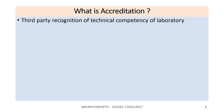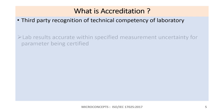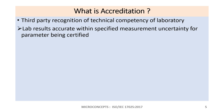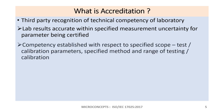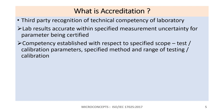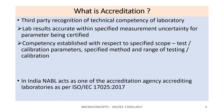This is the logo which NABL will provide you upon obtaining accreditation. Accreditation is third-party recognition of the technical competency of a laboratory. It indicates that lab results are accurate within specified measurement uncertainty for the parameter being certified, whether it is a calibration certificate or test certificate. It also indicates competency established with respect to specified scope — test or calibration parameters, specified methods, and range of testing or calibration — all of which will appear in your accreditation certificate.